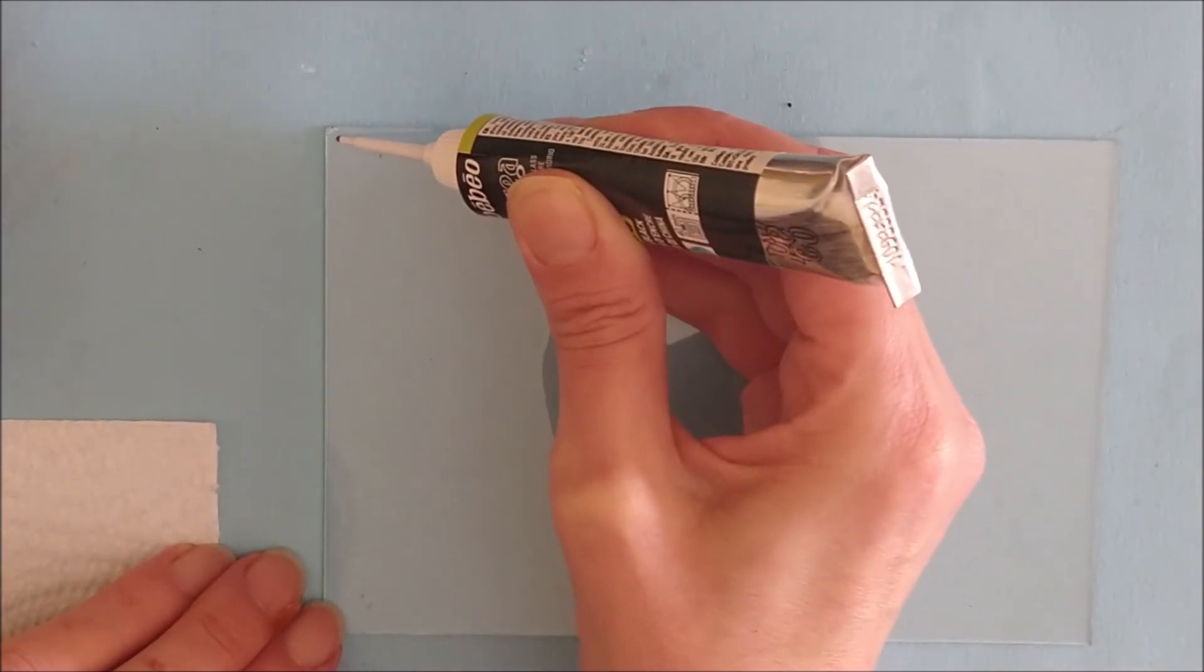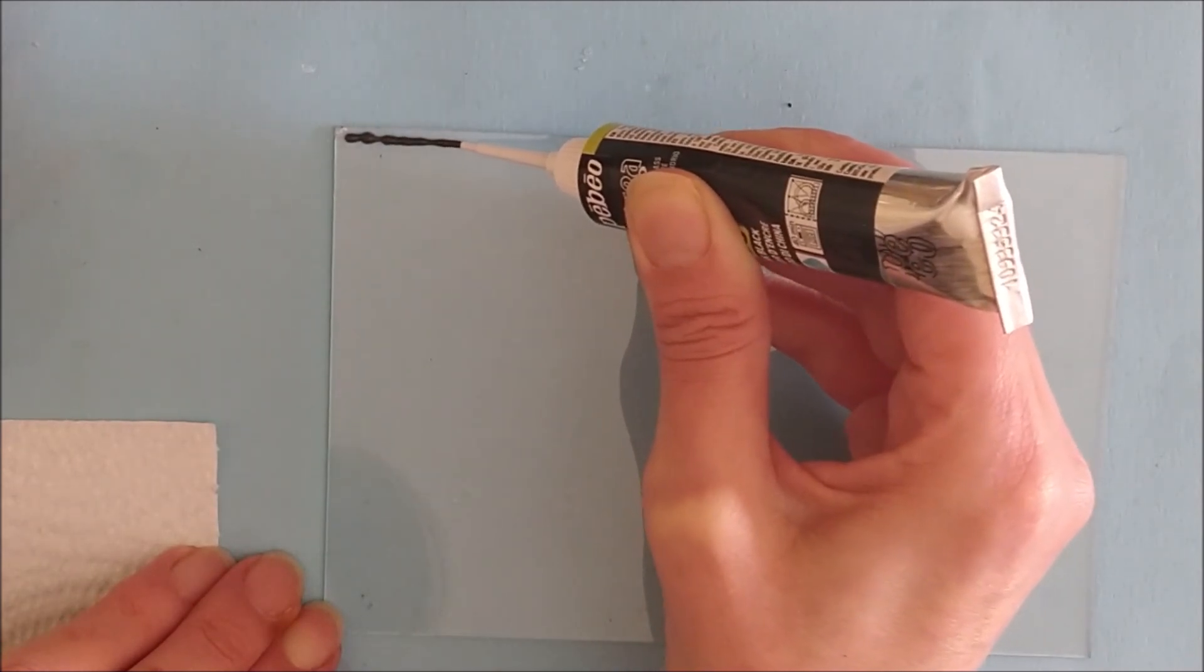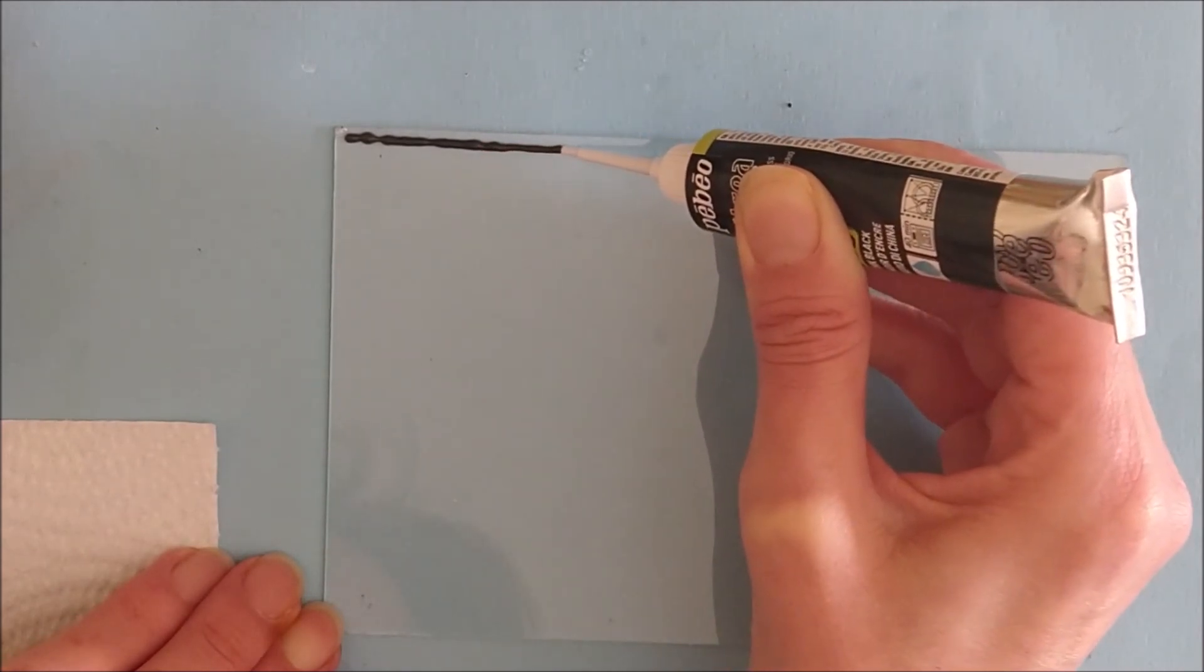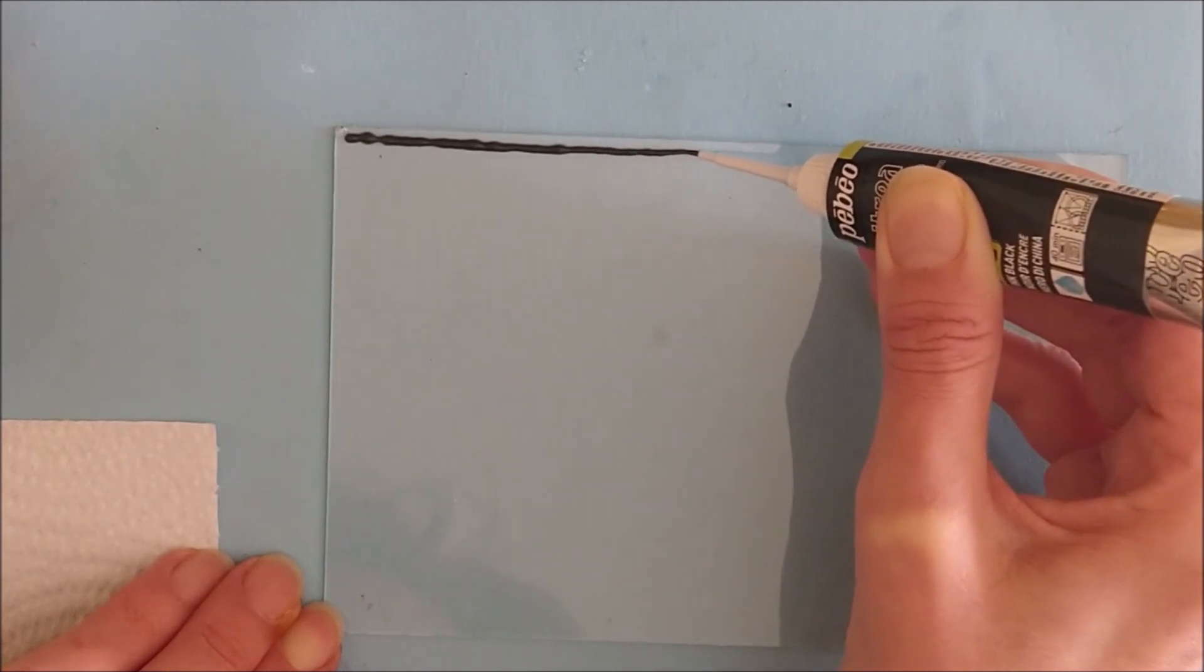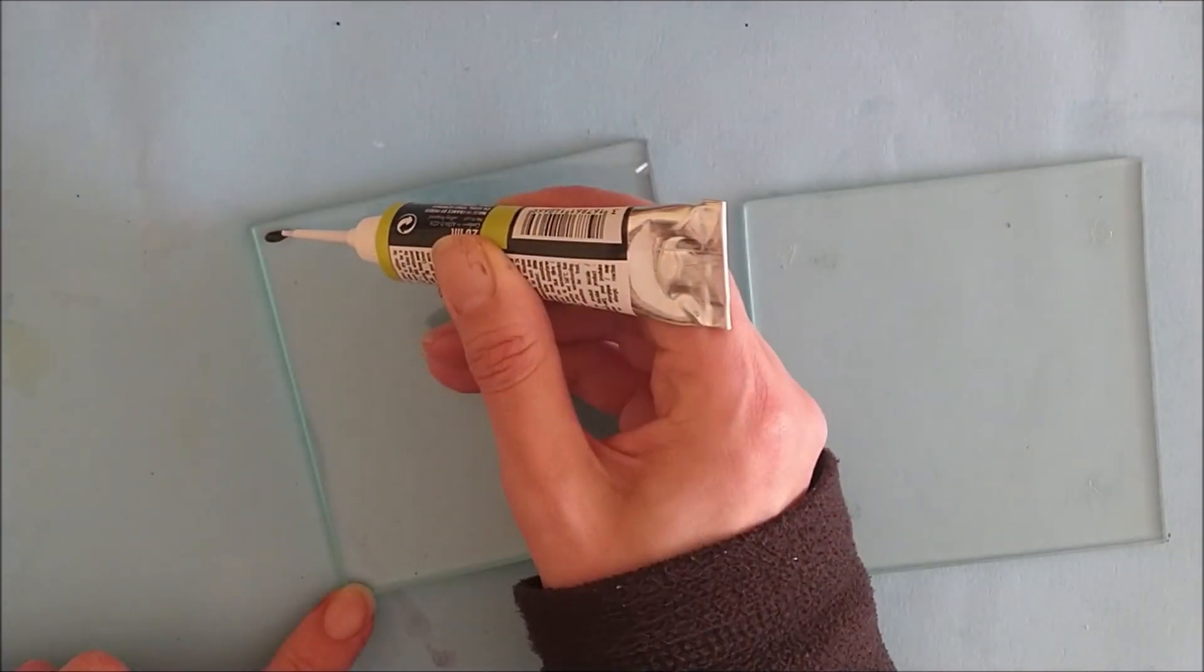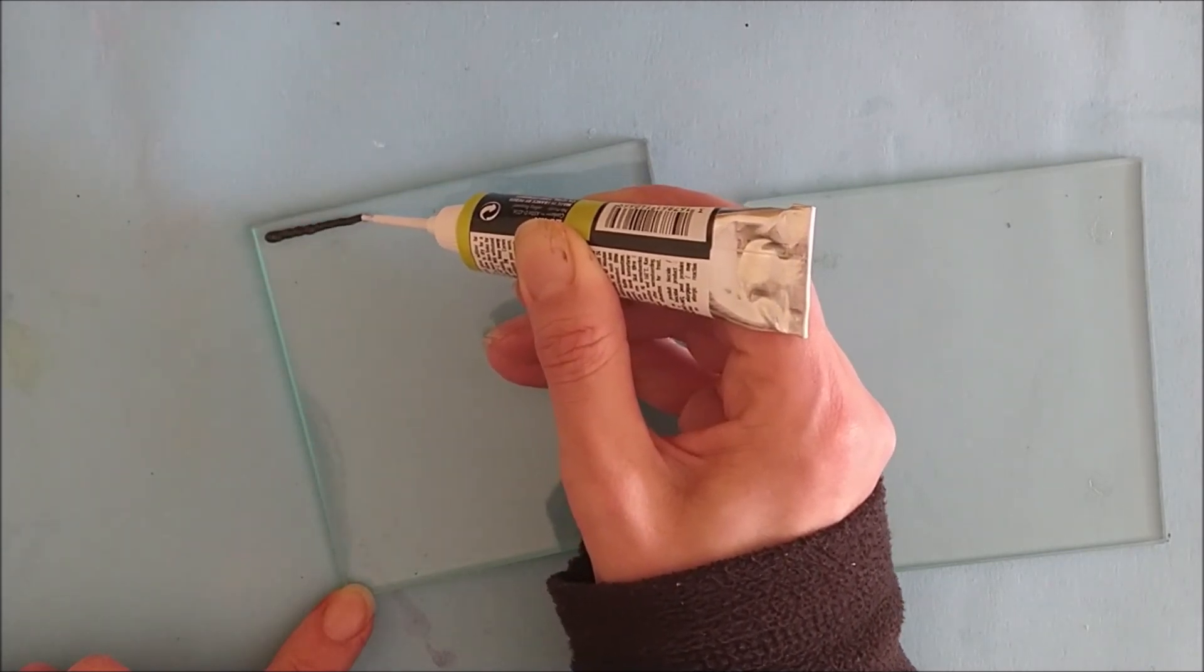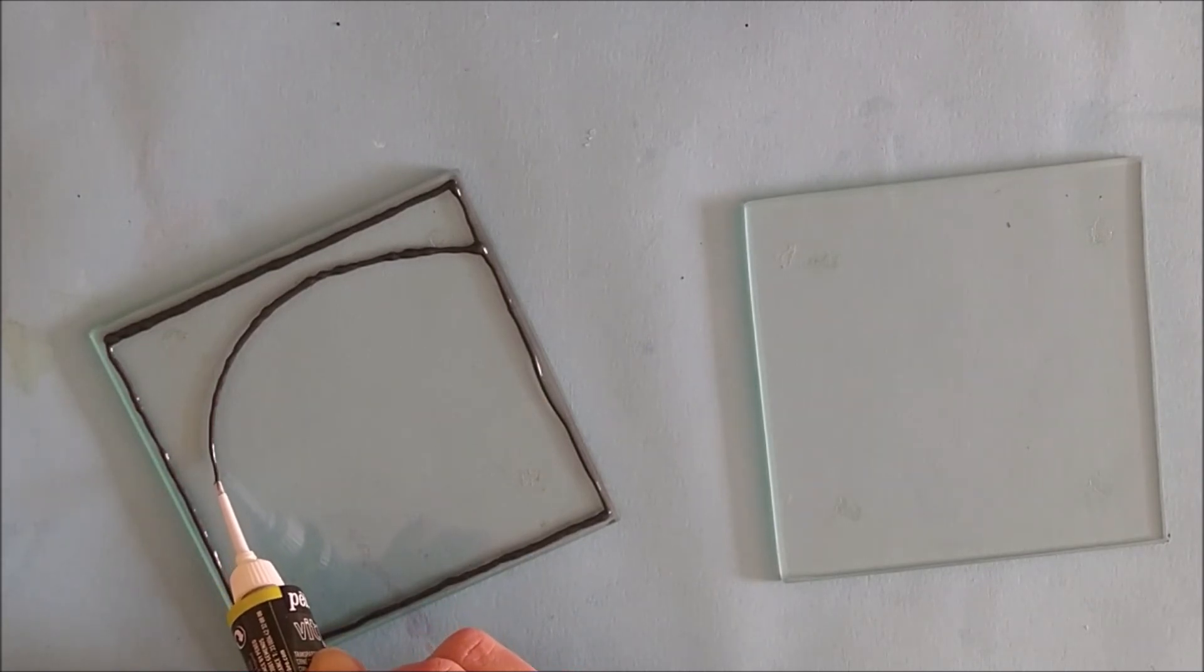So my first attempts at using the outliner were a bit wobbly and dodgy to be quite honest with you. It does need a very steady hand. I tried various different methods of applying the outliner. I tried gliding it across the glass. That didn't work at all. I tried applying it slowly. I tried applying it quickly. I found I was getting a lot of little blobs and blemishes where I was hesitating or adjusting my squeeze so it was coming out the tube too quickly or too slowly.